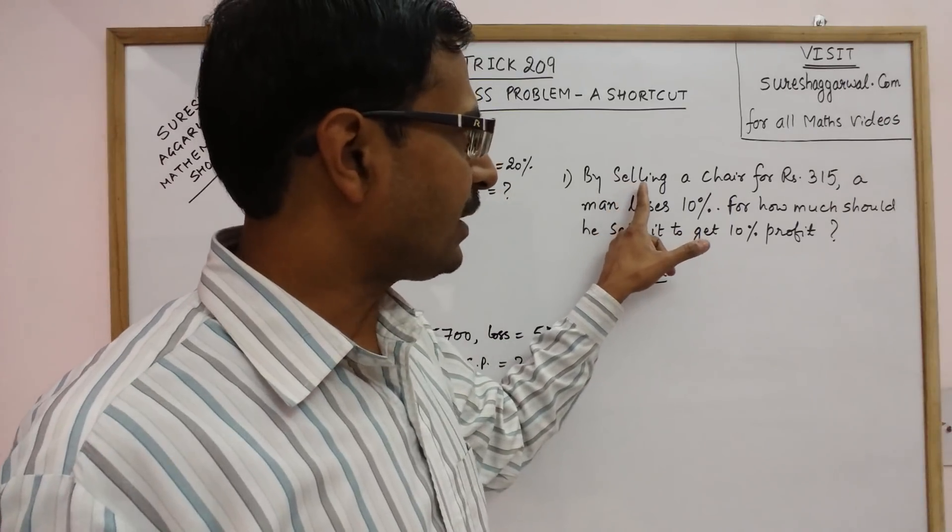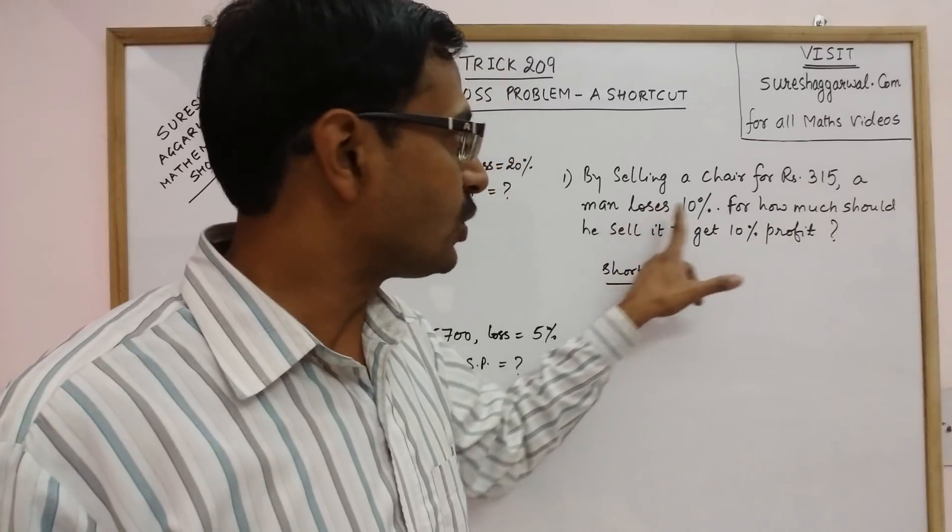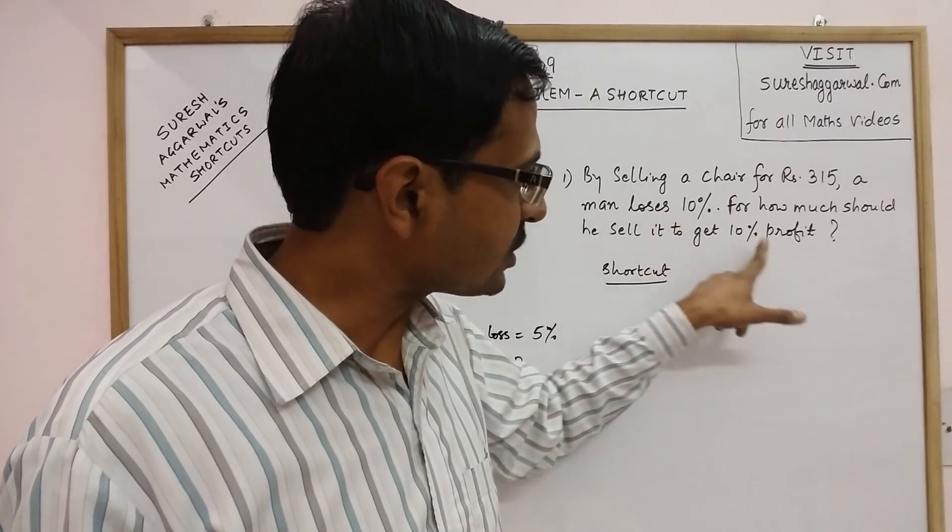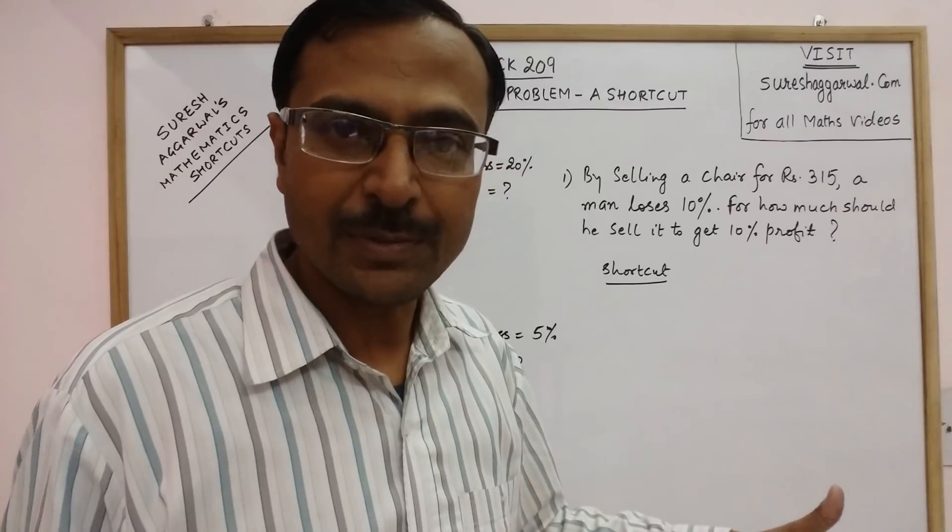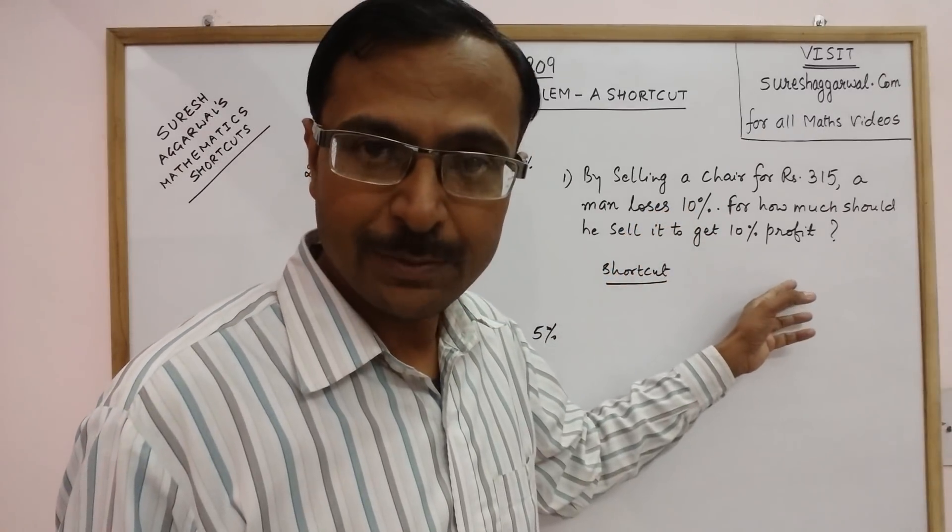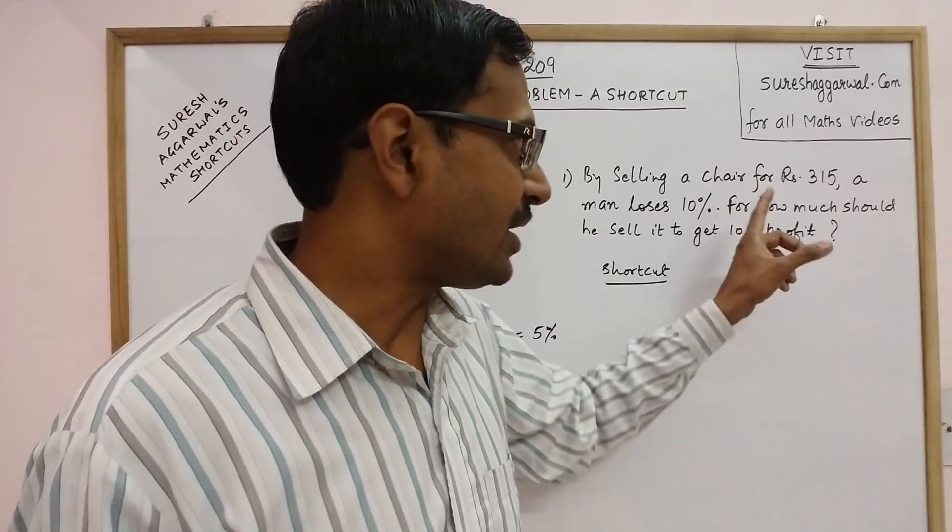Let us understand this problem. By selling a chair for rupees 315, a man is losing 10%. Now he wants to convert this loss into a gain of 10%. So we need to find out for how much he should sell the chair.